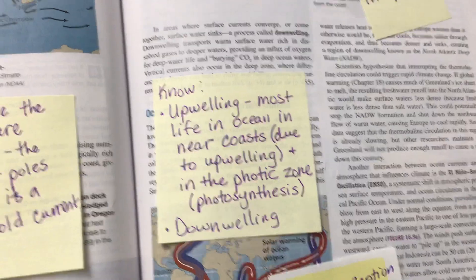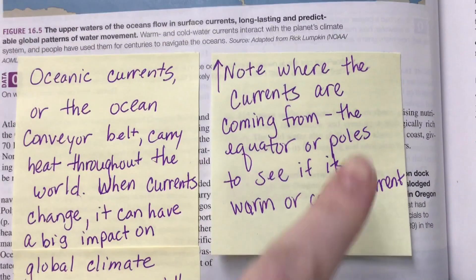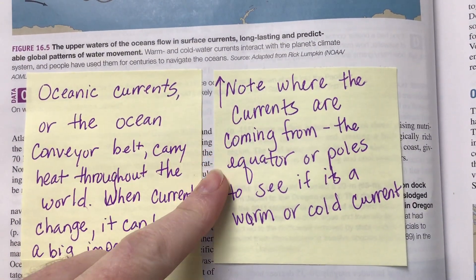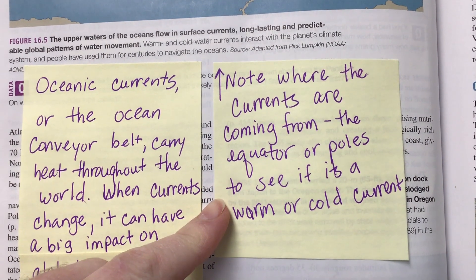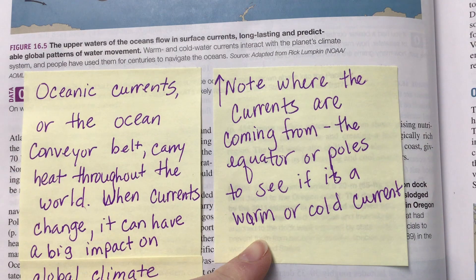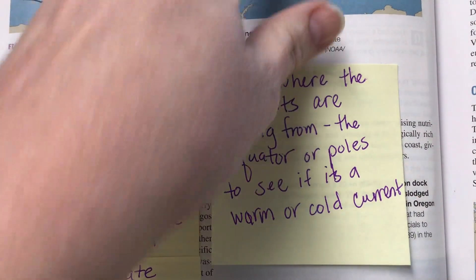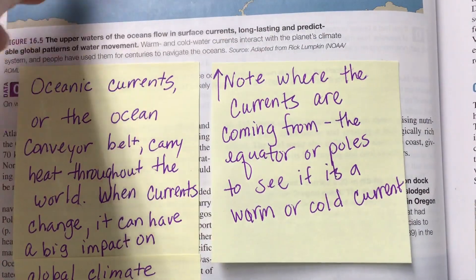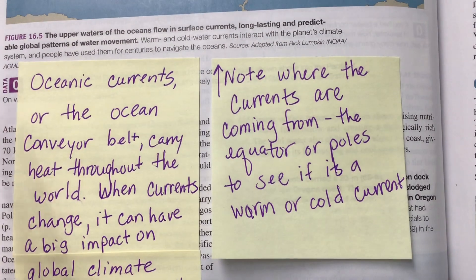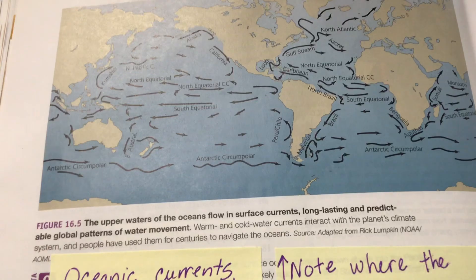On the next page, 424, we have a picture of the ocean's currents. Note where the currents are coming from — the equator or the poles — to see if it's a warm or cold current. On your exam, you will have a question that will talk about specific currents and ask which coast next to those pieces of land is going to be cooler or warmer. What you want to do is look at the current that's next to it.